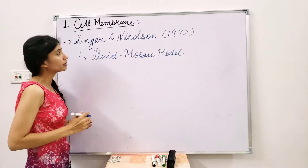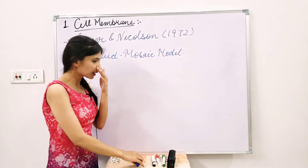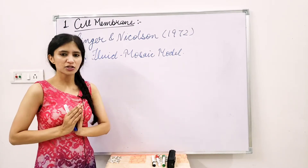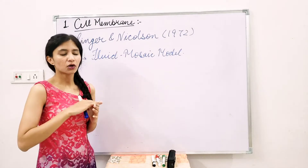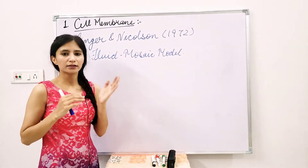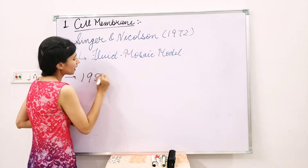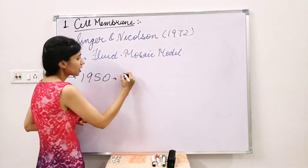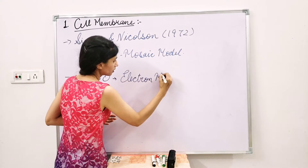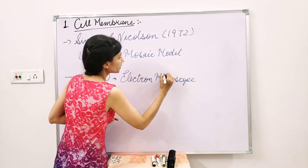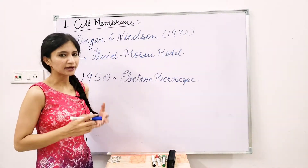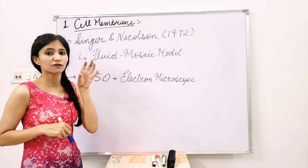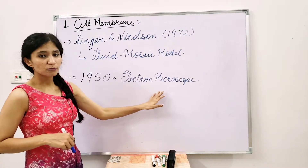Initially, the internal structure of the cell was not well understood until around 1950, when a very high-configuration microscope came into existence — the electron microscope. Two types were there: TEM (Transmission Electron Microscope) and SEM (Scanning Electron Microscope). TEM is widely used to see the exact structure of the cell membrane. Electron microscopes came into existence around 1950.